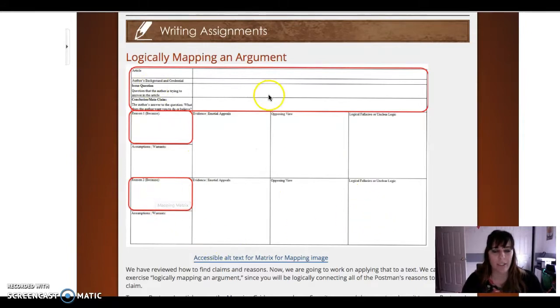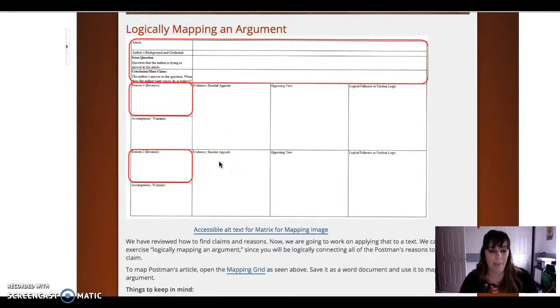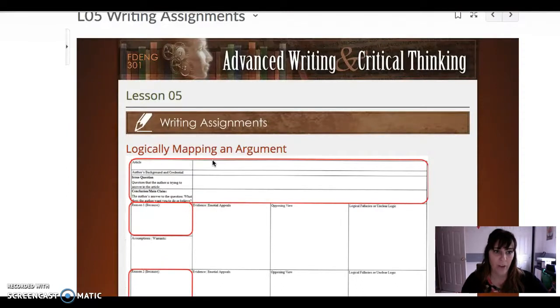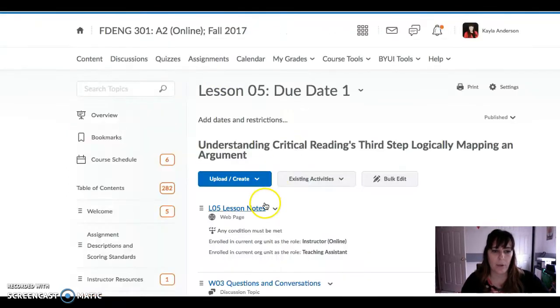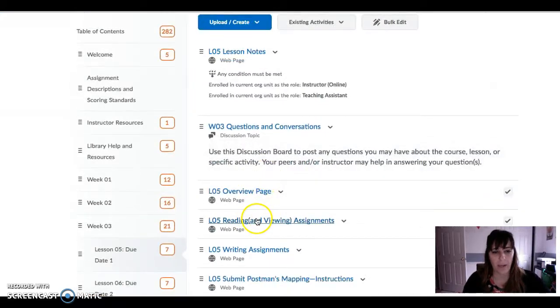So really just map what's here outlined in those red boxes and remember that you're mapping Postman's article for lesson 5 and you'll find that in the lesson. So you're not mapping anything else, it's in the reading assignment.